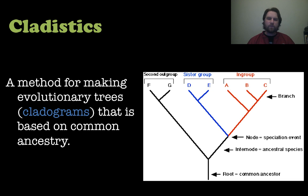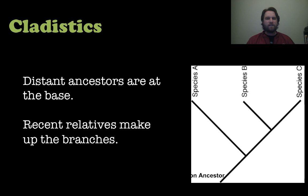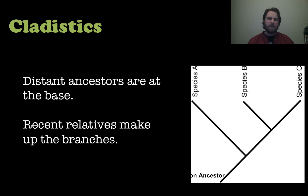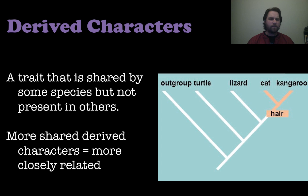Cladistics is the method for making cladograms, based on common ancestry. You have roots (the common ancestor), and nodes and internodes where branches come off. The closer species are on the cladogram, the more closely related they are. Distant ancestors are further down at the base, while recent relatives make up the branches — like species A, B, and C — with B and A potentially being more closely related.